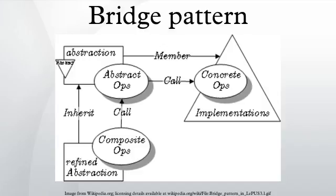When a class varies often, features of object-oriented programming become very useful because changes to a program's code can be made easily with minimal prior knowledge about the program. The bridge pattern is useful when both the class and what it does vary often. The class itself can be thought of as the implementation and what the class can do as the abstraction. The bridge pattern can also be thought of as two layers of abstraction.